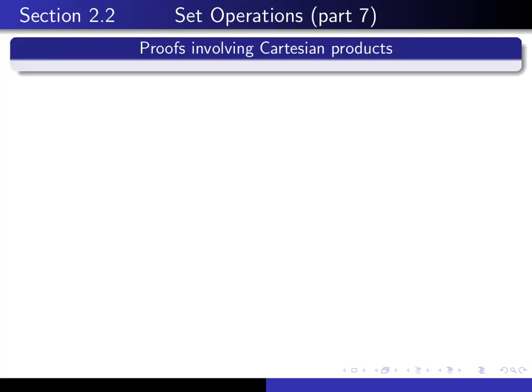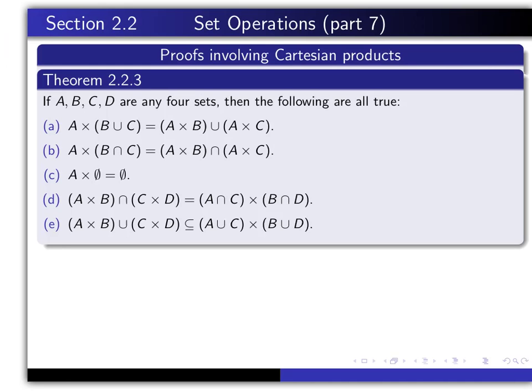This is part 7 in our series of lectures on section 2.2, and in this lecture we'll do a proof involving Cartesian products of sets. There are several general results that one can prove involving Cartesian products and other set operations. This is theorem 2.2.3 in your text that gives you some general properties that are true for Cartesian products of sets.